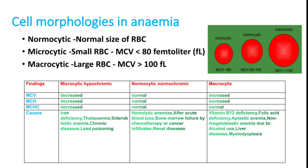Macrocytic anemia means MCV and MCH are increased while MCHC is normal. Vitamin B12 deficiency and folic acid deficiency are major causes — immature cells entering peripheral circulation are larger, increasing MCV, and are prone to hemolysis. Other conditions include aplastic anemia, non-megaloblastic anemia from alcohol use, liver diseases, and myelodysplasia. Whenever hemoglobin is low, look immediately at MCV, MCH, and MCHC to get a probable diagnosis.